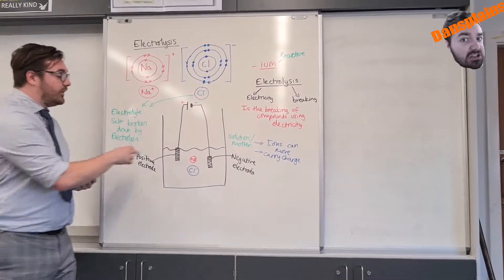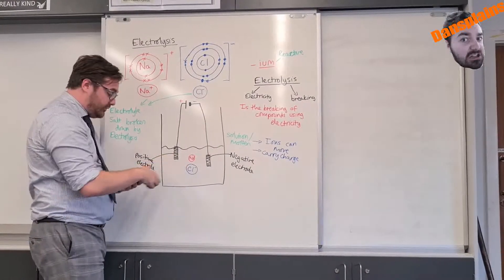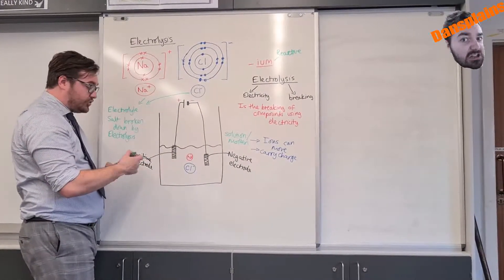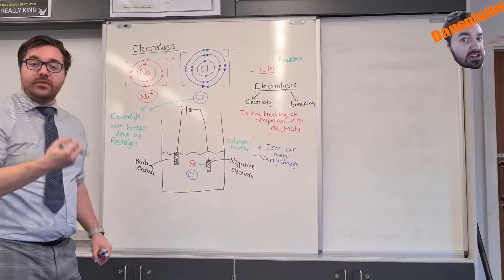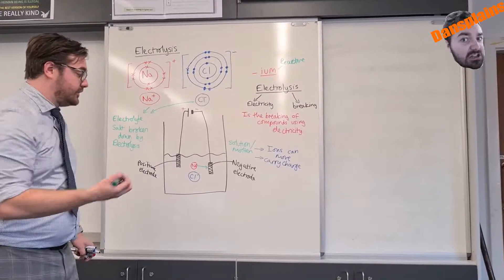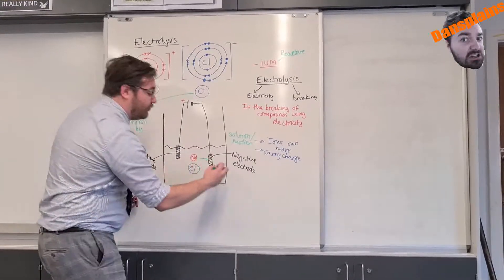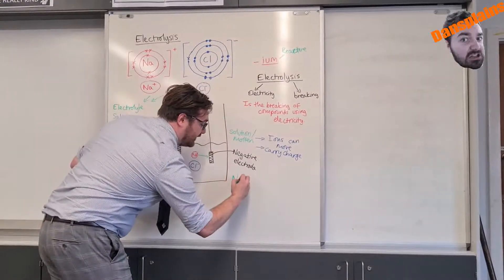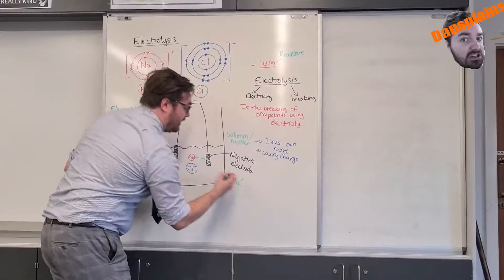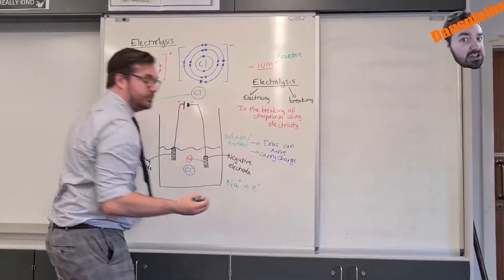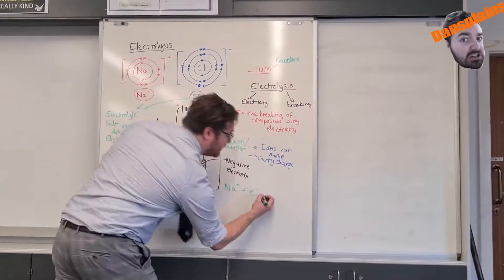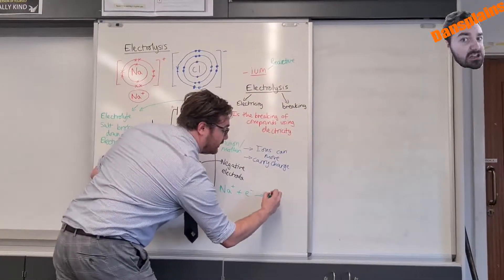Now what's going to happen is I have a positive in sodium so that sodium is going to be attracted to the negative electrode because opposite charges attract. When that sodium reaches the negative electrode it's going to be gaining an electron from the electrode and it will make my sodium.